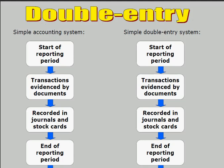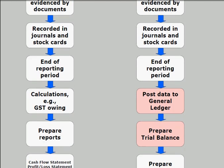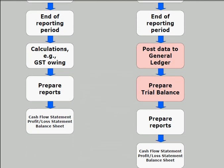But there are some differences. On the left hand side of the screen, at the end of the reporting period, we would do some calculations such as work out any GST owing at the end of the period. We would work out, for example, the balances of any loans that are owing. And then after those calculations are done, we would prepare the reports: the cash flow statement, the profit and loss statement, and the balance sheet.